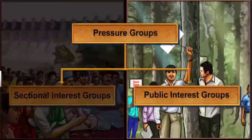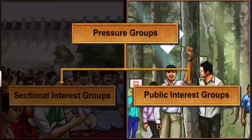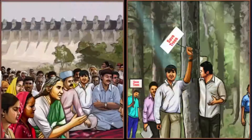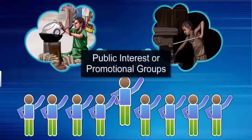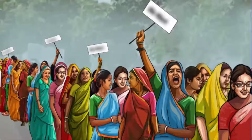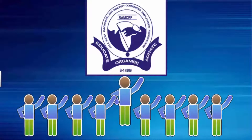On the other hand, public interest groups are organizations that represent common interests for the betterment of people or have a common cause that needs to be defended — for example, the groups fighting against bonded labor or child labor in order to liberate them from such suffering. These groups are also known as promotional groups. A public interest group or a promotional group may also work for self-interest along with others. For example, BAMCEF, the Backward and Minority Communities Employees Federation, is an organization comprising government employees that campaign against caste discrimination.